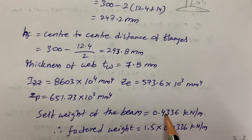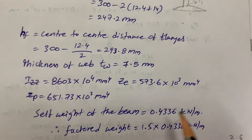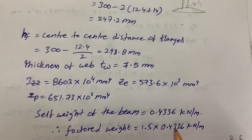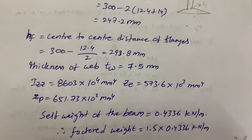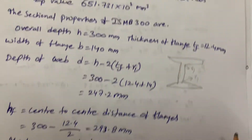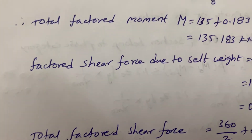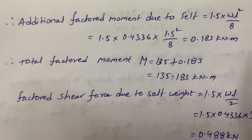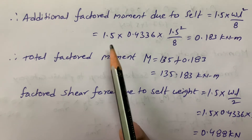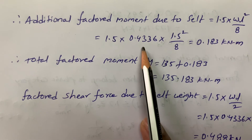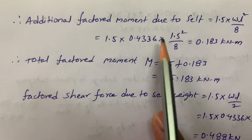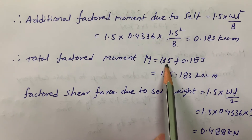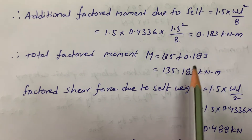The self-weight of the beam is 0.4436 kN/m and the factored self-weight is 1.5 × 0.4436 kN/m. The factored moment due to self-weight is calculated using 1.5 × wL²/8, with w = 0.4436 and L = 1.5 m. The total factored moment is 135 + 0.183 = 135.183 kN·m, where 135 kN·m is the moment from the concentrated load.